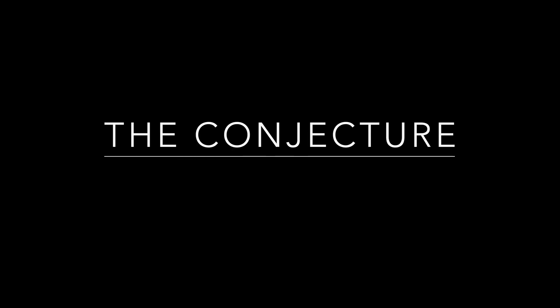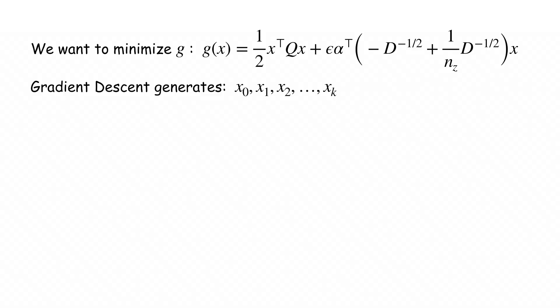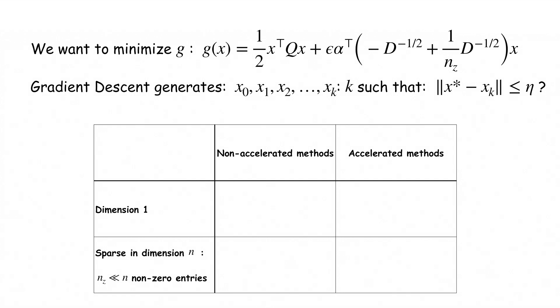The conjecture. Now let's get back to our problem PageRank. We run a gradient descent algorithm to minimize the function G and it returns a sequence of points x_1, x_2, x_K. Now how many steps K are required such that the distance between the true minimizer x* and our approximation x_K is smaller than some small η? In dimension 1, K equals 1/ε log(1/η) for non-accelerating methods, and it equals the faster √(1/ε) log(1/η) for their accelerated counterparts.